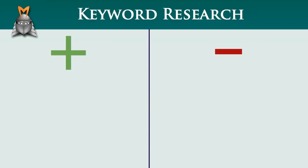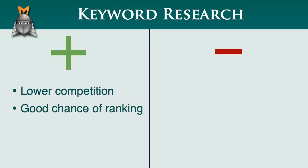The best thing about long-tail keyword phrases is that the competition for these phrases is often lower. So if you write an article that specifically targets a long-tail derivative phrase, you may have a good chance of ranking for that keyword. The flip side, of course, is that long-tail keyword phrases do not usually generate a great deal of traffic, which is why you need to find as many of them as possible.